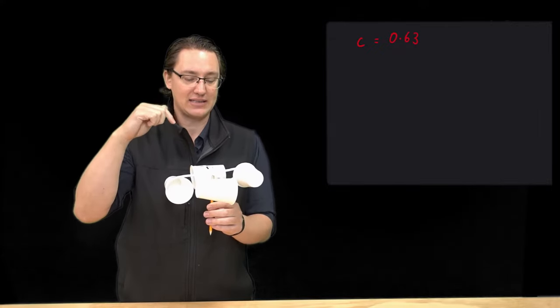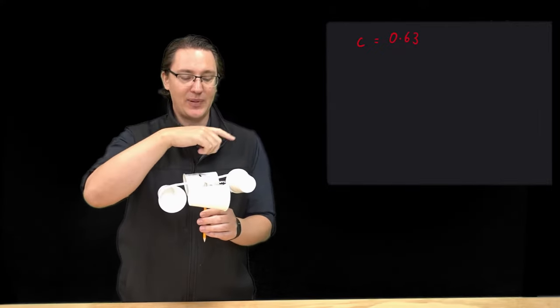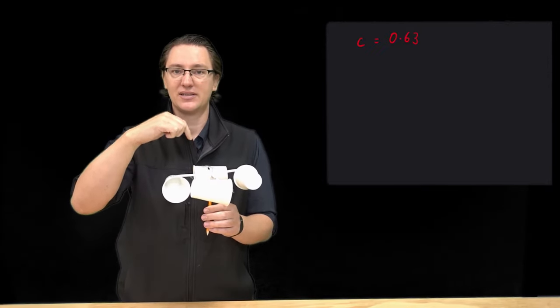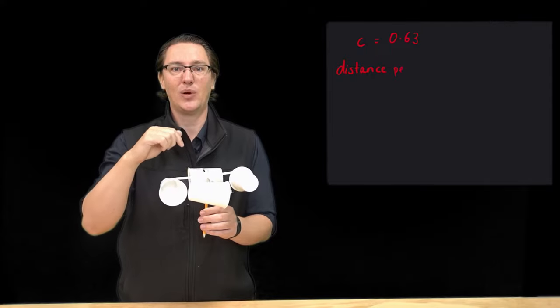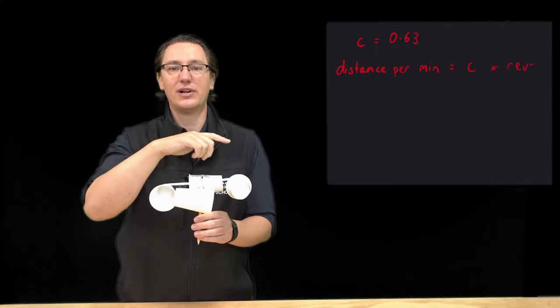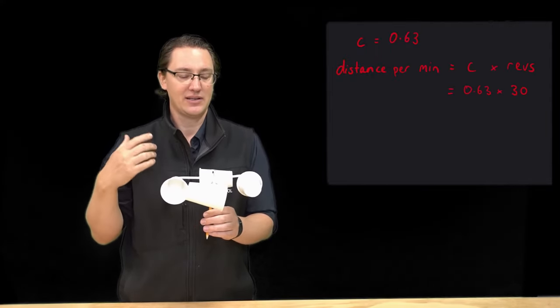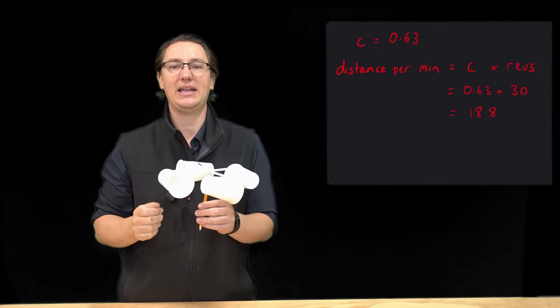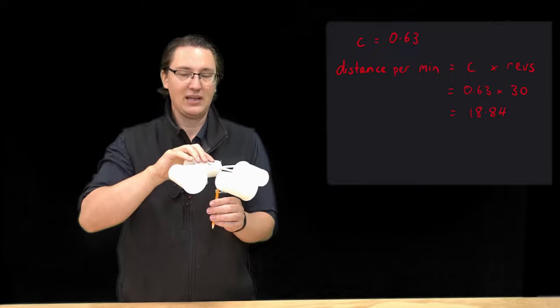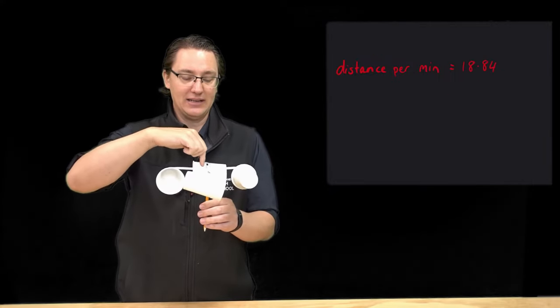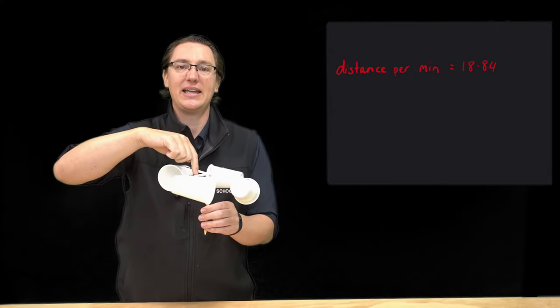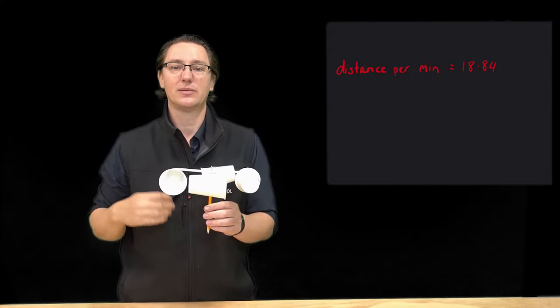Now I know that when I was counting it spun around 30 times in one minute. So the next thing I need to do is times that circumference, the 0.63, by the number of revolutions which was 30. So 0.63 by 30 gives me 18.84, again rounding. So every minute my wind, or my cups, are traveling 18.84 meters, so that's per minute.